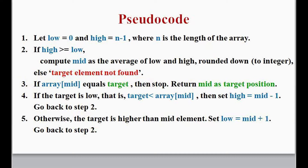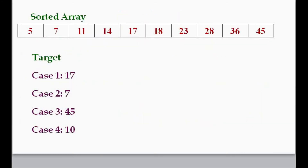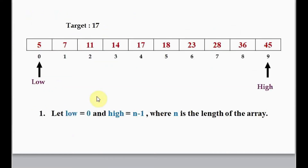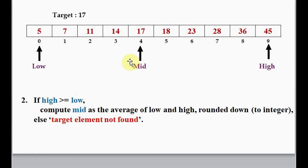Let's see how this pseudocode works with our four test cases. This is our sorted array input, and the targets are given. I'll take the first target, 17. The first step: we set low to index position 0 and high to n minus 1. There are 10 elements, so high is 9. The second step is finding the value of mid — the average of low and high: 0 plus 9 divided by 2 gives 4.5, rounded to integer gives 4.